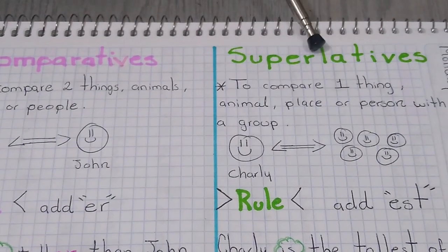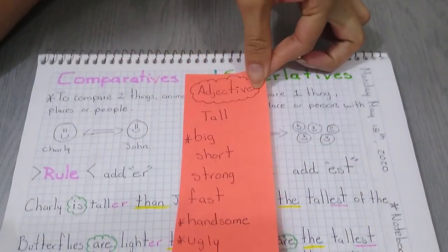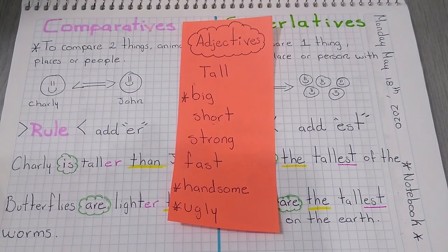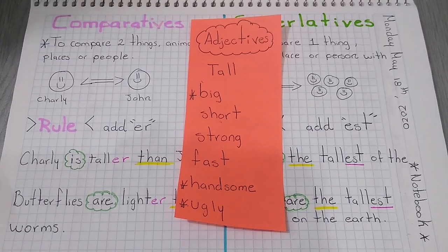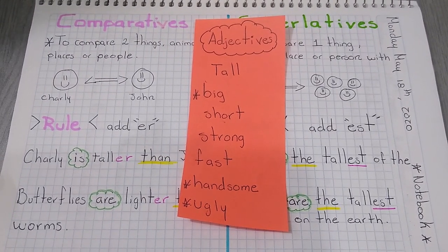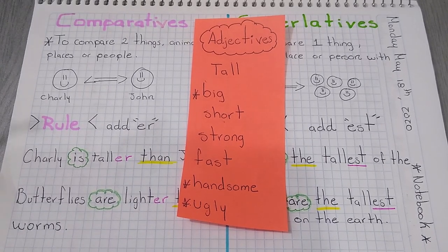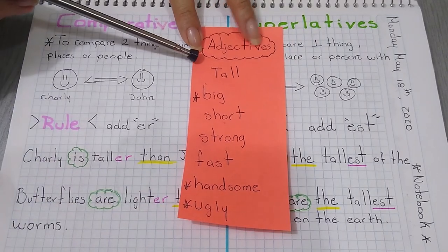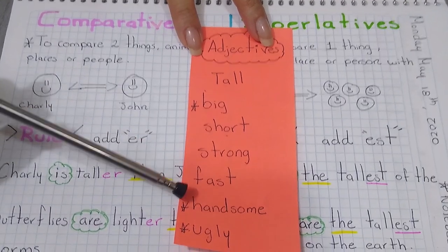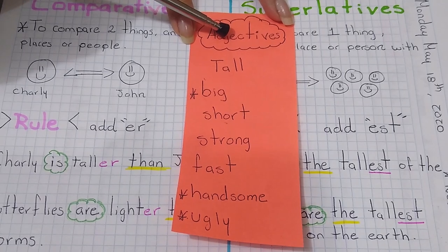To work with comparatives and superlatives, we are always going to use adjectives. Do you remember adjectives? The adjectives are words that we use to describe people, animals, places. Here I have some examples: tall, big, short, strong, fast, handsome and ugly. All of them are adjectives.